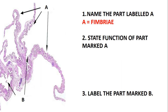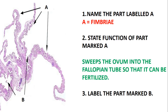Then state the function of the part marked A. This part normally sweeps the ovum into the fallopian tube. When the ovum is being released from the ovary, the first structure which is going to receive the ovum is the fimbria, and this fimbria is going to sweep and take the ovum into the fallopian tube.